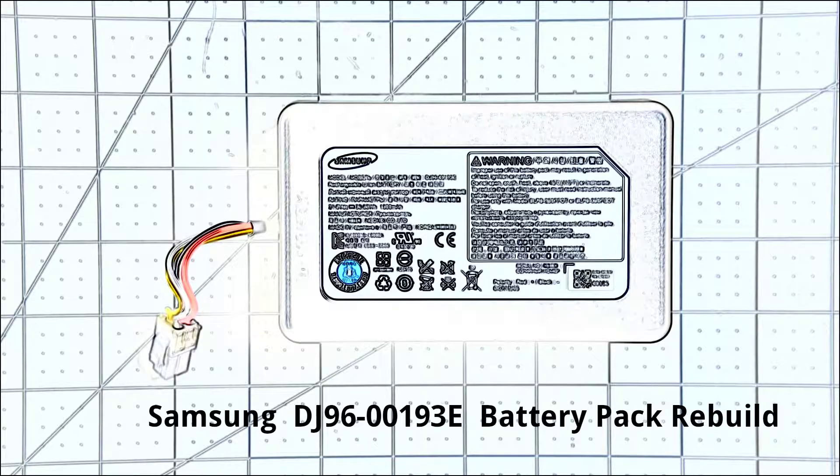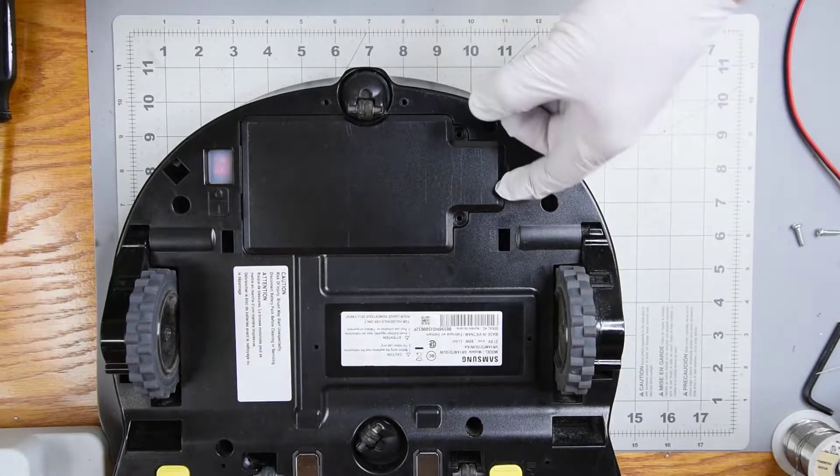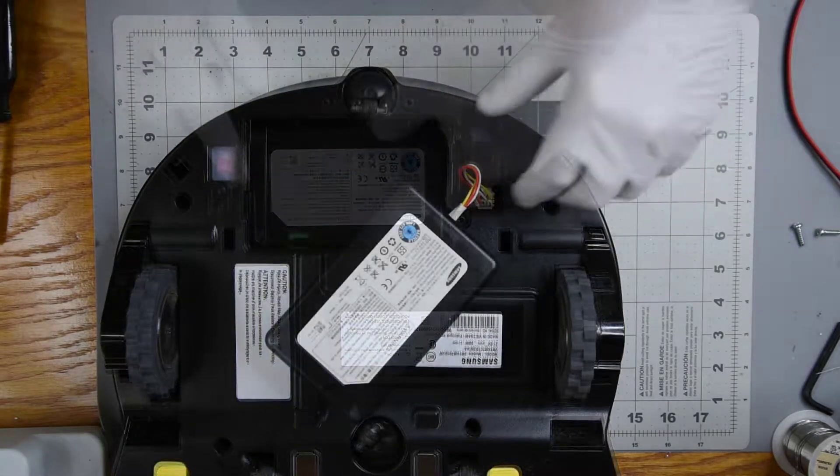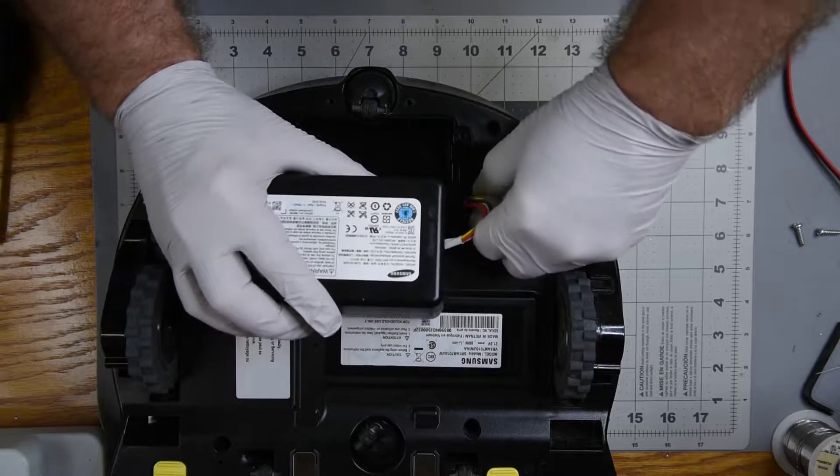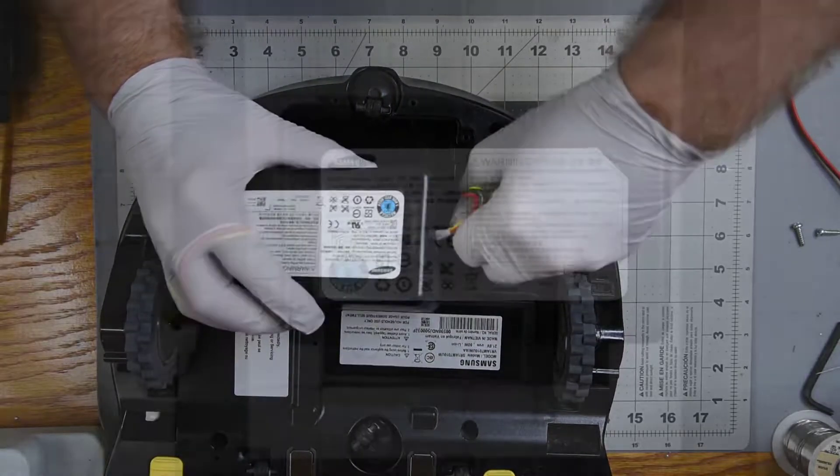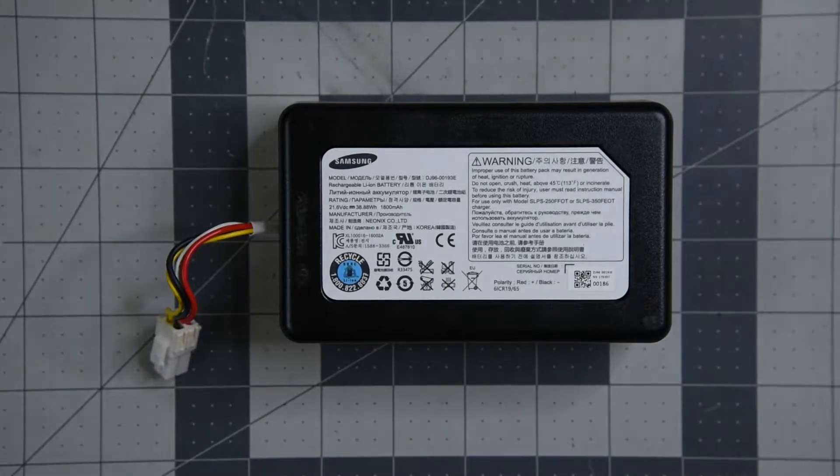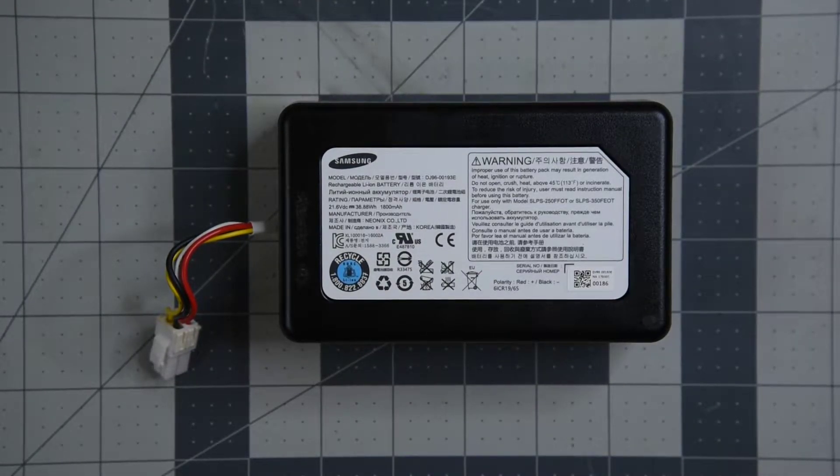This battery pack goes in a Samsung PowerBot vacuum cleaner. It's over three years old and will run for like 10 to 15 minutes, then stop and head back to recharge. It doesn't recharge for as long as it should. I'm pretty sure the cells are wearing out, and because the price of a new pack is more than the vacuum is worth, it's rebuild time.